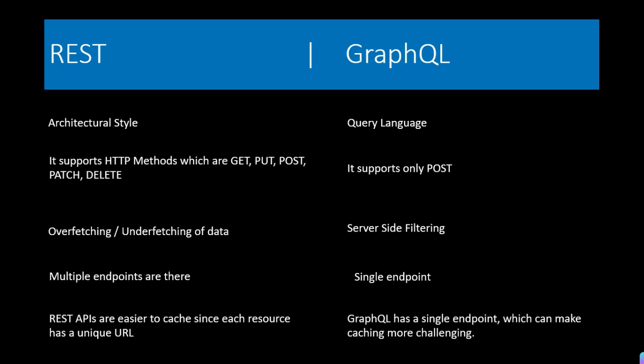There is one more difference: versioning. Versioning is basically required to make backward compatibility. In case of REST, we use versioning to maintain backward compatibility. But in case of GraphQL, APIs can evolve over time without breaking changes, so we don't need versioning. So this was all about the differences between REST and GraphQL. If you want more information you can comment and I will surely try to help you out. Thank you.